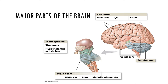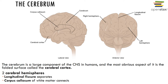Starting with the cerebrum, it accounts for about 80% of the brain's mass. The cerebrum functions in conscious thought, memory storage and processing, sensory processing, and the regulation of skeletal muscle contractions. The surface of the cerebrum is highly folded and covered with a superficial layer of gray matter called the cerebral cortex.